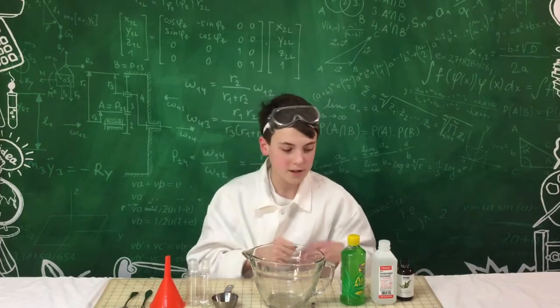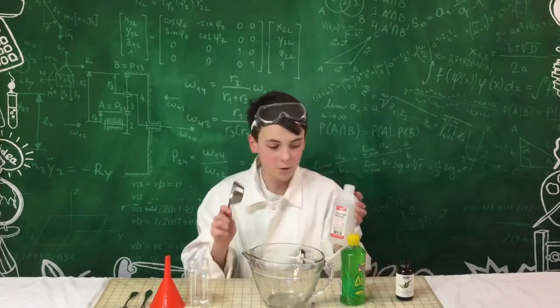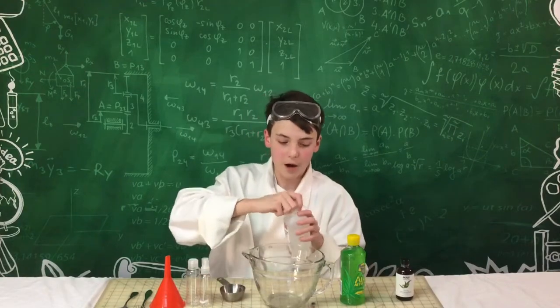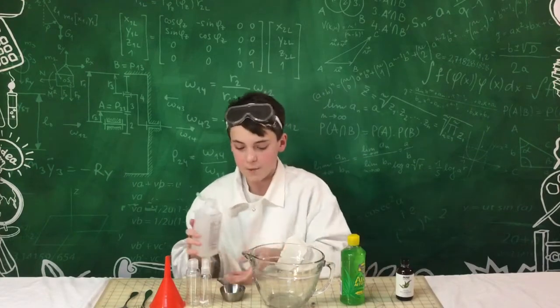So what we're going to do is take the one-third cup and pour two one-third cups of alcohol.